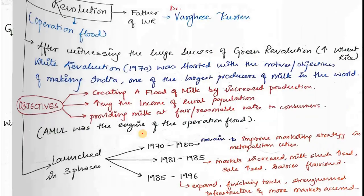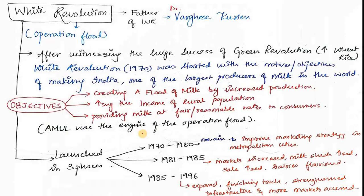After the Green Revolution, came the White Revolution. The father of the White Revolution is Dr. Varghese Kurien. The White Revolution also had the Operation Flood. After witnessing the huge success of the Green Revolution in increasing wheat and rice production, the White Revolution started in 1970 with the objective of making India one of the largest producers of milk in the world.